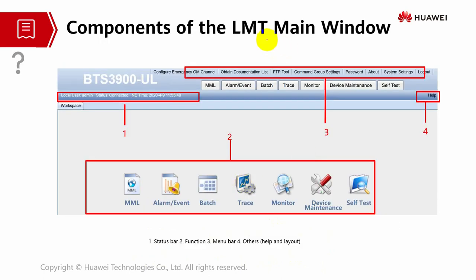These are the components of the LMT main window. Basically you have the user information showing who is connected, all the parameters, and the modules available in this platform: MML, alarm event, batch, trace, monitoring, device maintenance, and self-test. The upper icons include system password, FTP tool, and the help button. The main window also shows what type of base station and technology is being used.